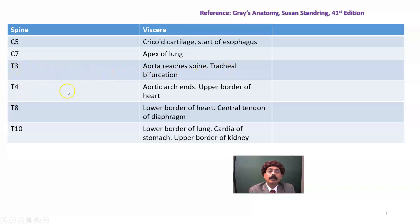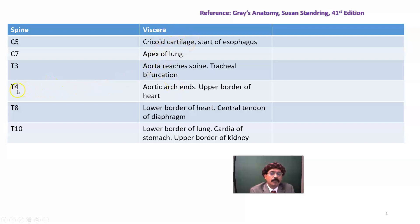At the T4 level, the aortic arch ends. The aortic arch is a continuation of the ascending aorta. At the same level of thoracic vertebra 4, at the spinous process level, we have the upper border of the heart.